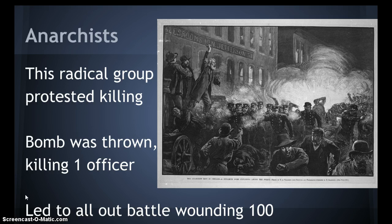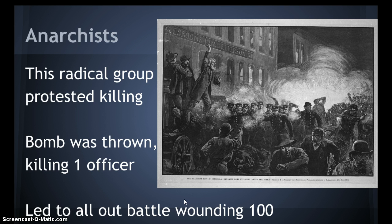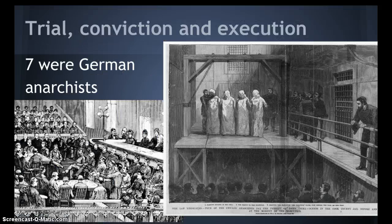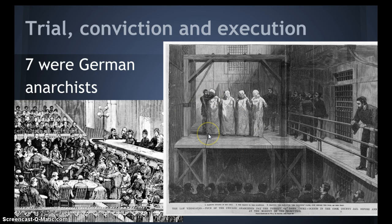This radical group in this protest — here's a great sketch from the era — a bomb was thrown and one police officer was killed, six others wounded. This led to an all-out battle between both sides, wounding up to 100 people and leading to the arrest of eight people. Seven were German immigrants with ties to anarchism. The trial was based on weak evidence. All were convicted, and four, shown here, were executed.